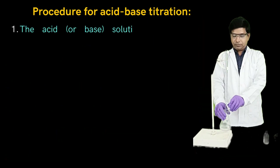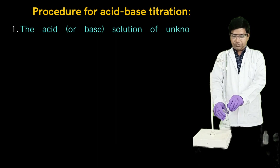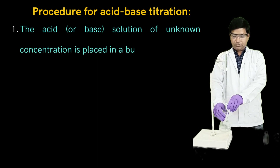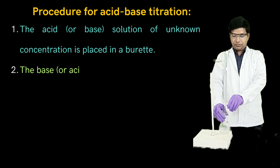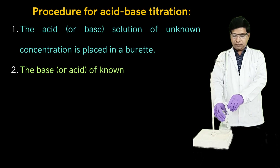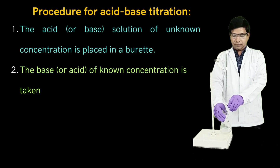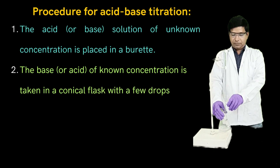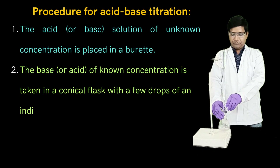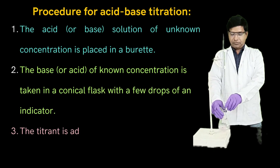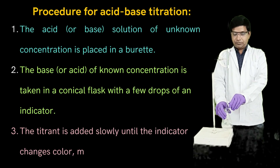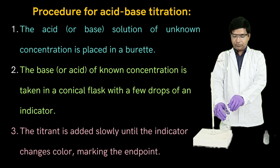The procedure for acid-base volumetric analysis: First, the acid or base solution of unknown concentration is placed in a burette. Second, the base or acid of known concentration is taken in a conical flask with a few drops of an indicator. Third, the titrant is added slowly until the indicator changes color, marking the endpoint.